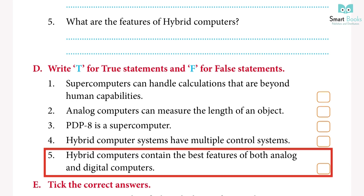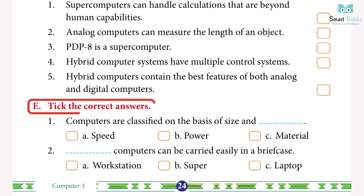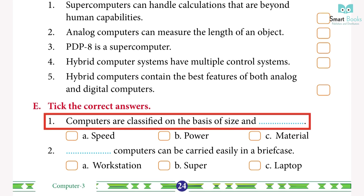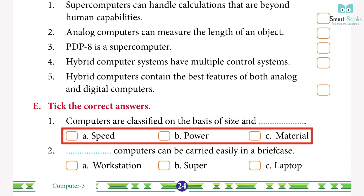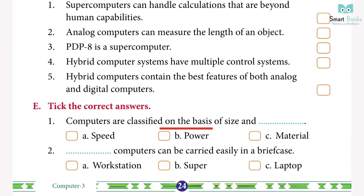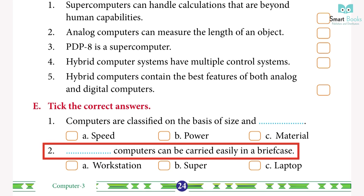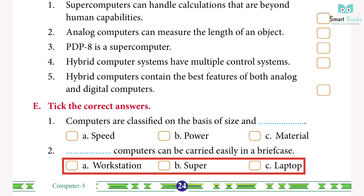5. Hybrid computers contain the best features of both analog and digital computers — True. Exercise E — Choose the correct answer: 1. Computers are classified on the basis of size and ___. a) Speed, b) Power, c) Material. Answer: b) Power.